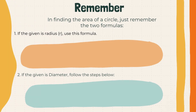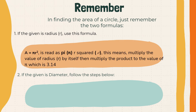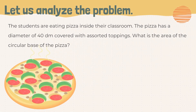In finding the area of a circle, remember the two formulas. If the given is the radius, use A equals pi r squared, or A equals pi times r times r — read as pi, then r squared. This means multiply the value of the radius by itself, then multiply the product by the value of pi, which is 3.14. If the given is the diameter, divide the diameter by 2 to find the radius, then use the formula A equals pi r squared.